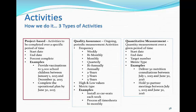Project-based activities were originally the only type of activity in the system. These are activities to be progressively completed over a specific period of time. They're measured by start date, end date, and percent complete. An example of a project-based activity might be to provide vaccinations to 5,000 school children between January 1st, 2015 and December 31st, 2015. The start date is January 1st, the end date is December 31st. If the current date is June 30th and 2,500 school children have been vaccinated, the percent complete would be 50%, right on track.